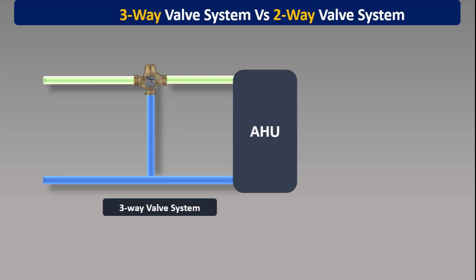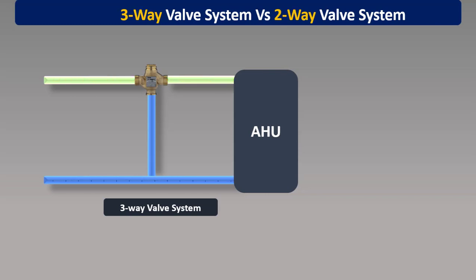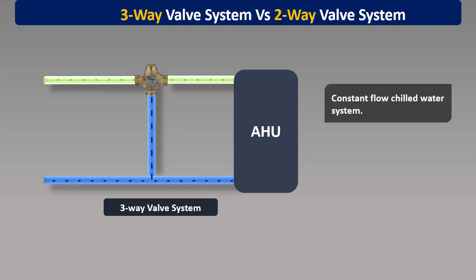Before discussion about the chilled water system, let's have a brief discussion about three-way and two-way valve systems. In the three-way valve system, three-way valves are used — these valves have three ports. A mixing three-way valve is used with an AHU to control the chilled water flow through the cooling coil. Chilled water flow is modulated to achieve the desired set point of the AHU supply air. When cooling load is reduced, the valve will be partially closed, resulting in flow through the bypass line from the supply chilled water line to the return chilled water line. The three-way valve system is a constant flow system where chilled water flow through the system is constant at all times.